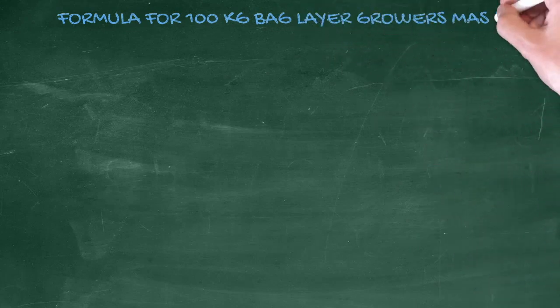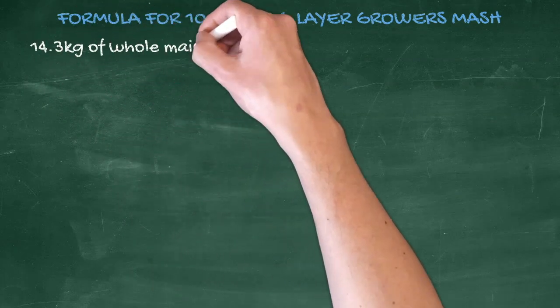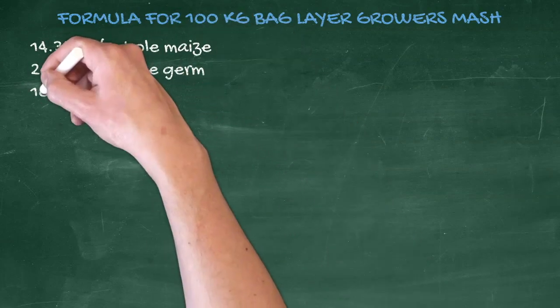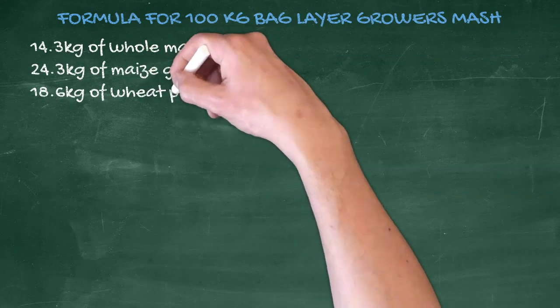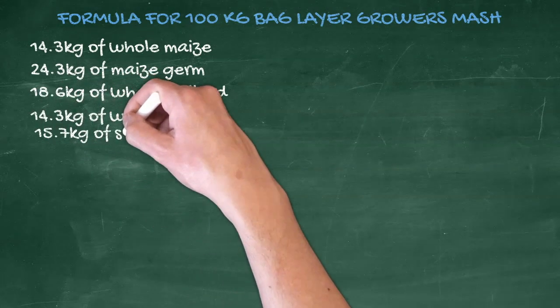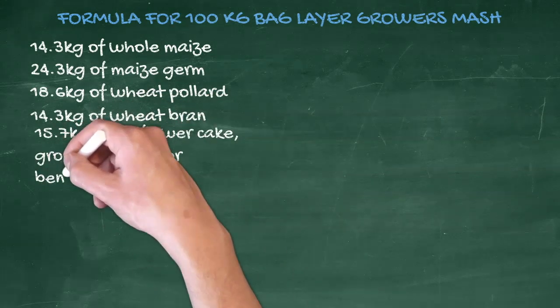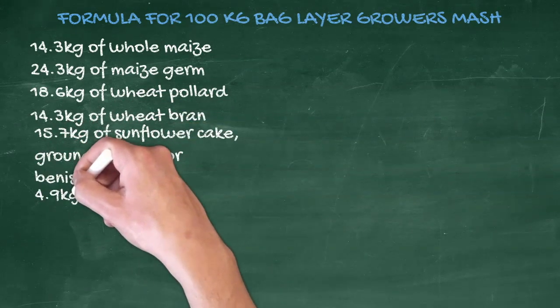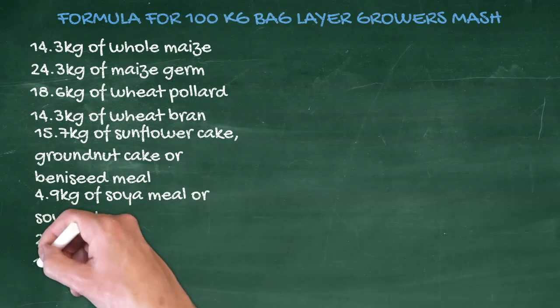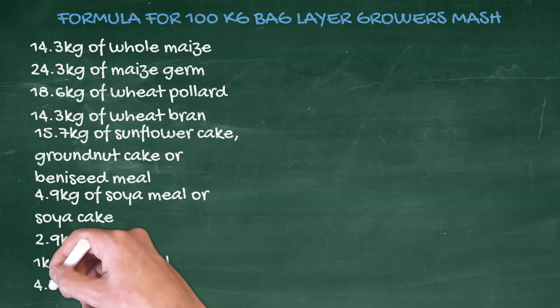The following ingredients can be used to make a 100 kg bag of layer growers mash: 14.3 kg of whole maize, 24.3 kg of maize germ, 18.6 kg of wheat pollard, 14.3 kg of wheat bran, 15.7 kg of sunflower cake, groundnut cake, or beniseed meal, 4.9 kg of soya meal or soya cake, 2.9 kg of lime, 1 kg of bone meal, 4.3 kg of fish meal.